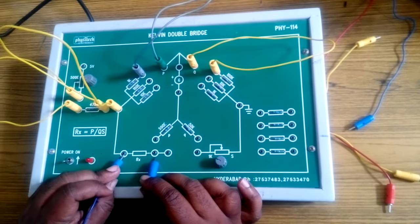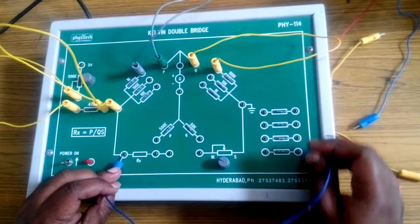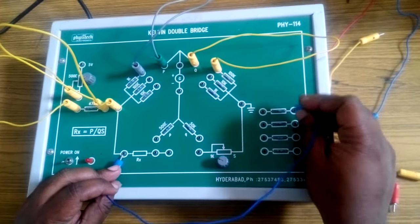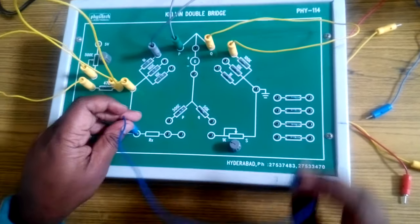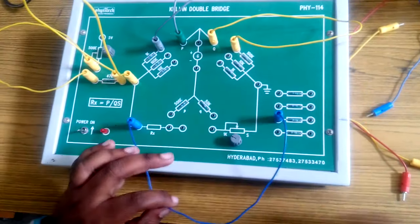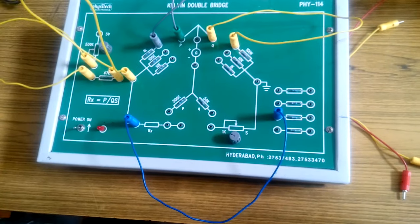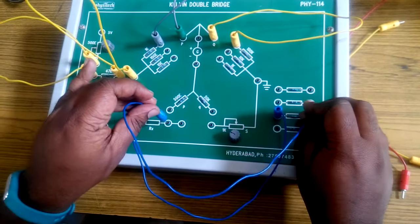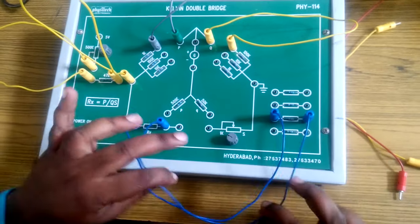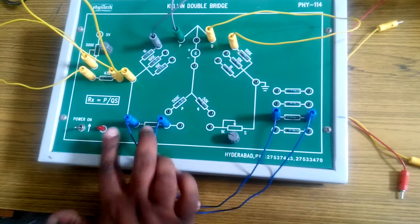From the point Rx you will be connecting one of the 4 resistors or the combination of these 4 resistors. In this particular video I will be demonstrating for one value. This is the unknown resistor which is connected over here.